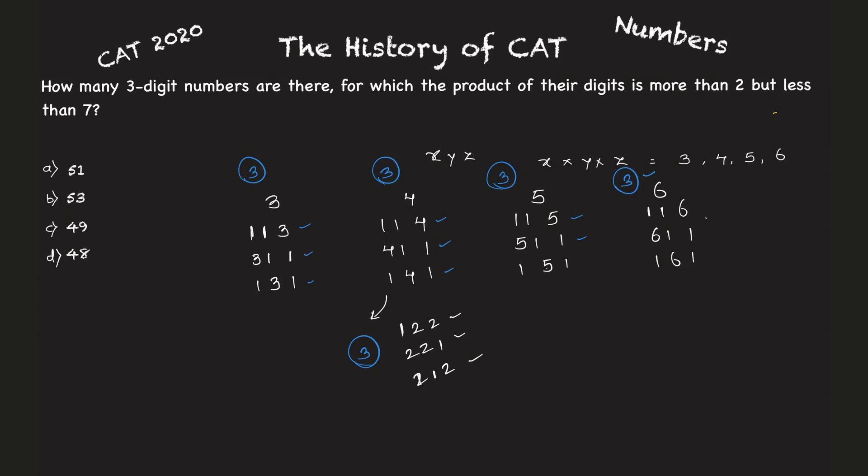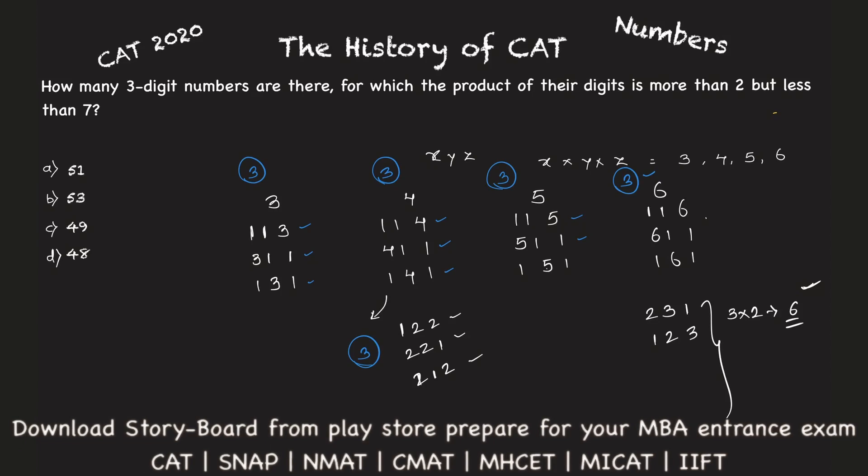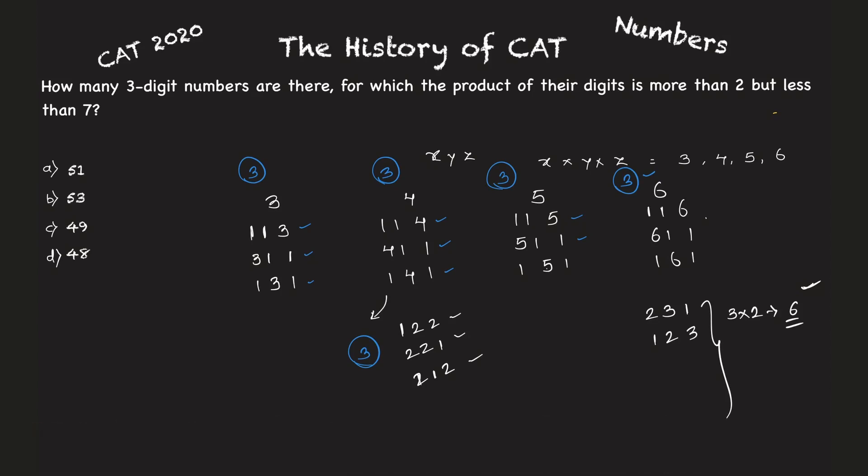Similarly, for six I can form two times three is six. So I can form two three one, then one two three. Three numbers can be arranged in three factorial ways, so three factorial is six. I can form six numbers where there are three distinct numbers as one, two, and three such that their product is two times three times one, which is six. So I can form six more numbers.